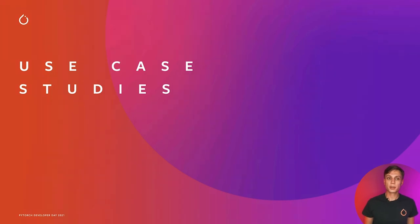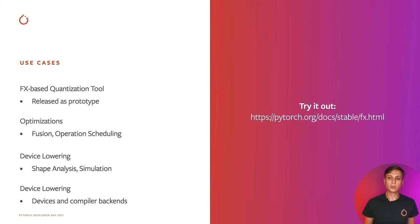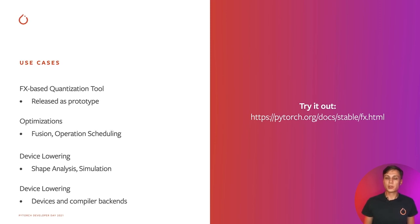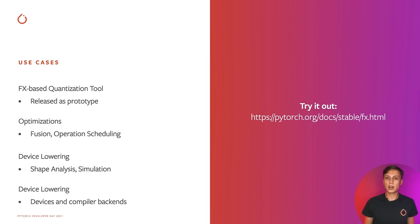Now let's take a look at a few of the use cases folks have found for Torch.fx. First, Torch.fx is being used in the prototype FX GraphMode Quantization tool — it provides the ability to programmatically modify operations and parameters of a model, so it is a good fit for quantization. Second, Torch.fx is being used for optimizations such as fusion and operation scheduling, for example fusing convolution and batch norm operations together, or scheduling asynchronous versus synchronous or local versus remote operations for maximum parallelism. Third, Torch.fx has been used for various analyses, including shape propagation or inference, or model simulation to determine performance characteristics without using actual hardware. Finally, Torch.fx is being used for device lowering to optimize model execution on various hardware devices and in optimizing compiler backends.